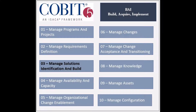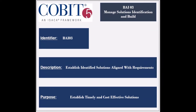The third process of the build-acquire-and-implement domain is called Manage Solutions Identification and Build. The process identifier is BAI3. The process focuses on maintaining the identified solutions in line with the enterprise requirements, including their design, procurement, or development. The configuration, testing, requirements management, applications, and infrastructure should be accordingly managed. The purpose of the process is to establish timely and cost-effective solutions that satisfy the enterprise needs.